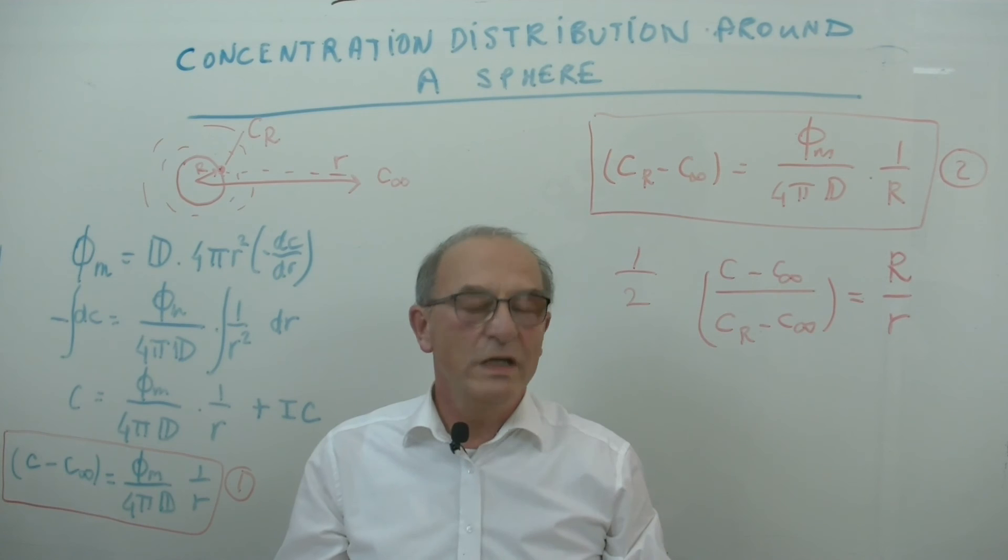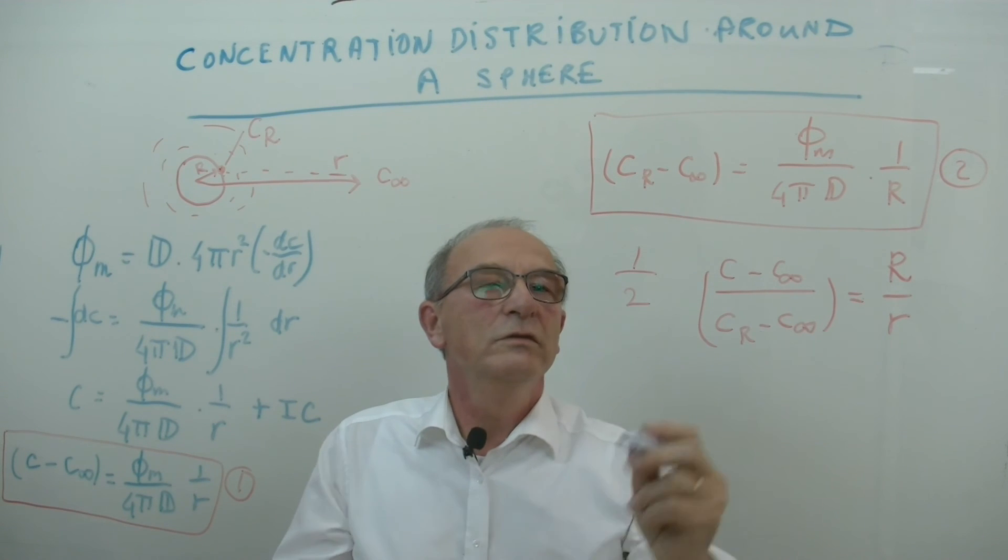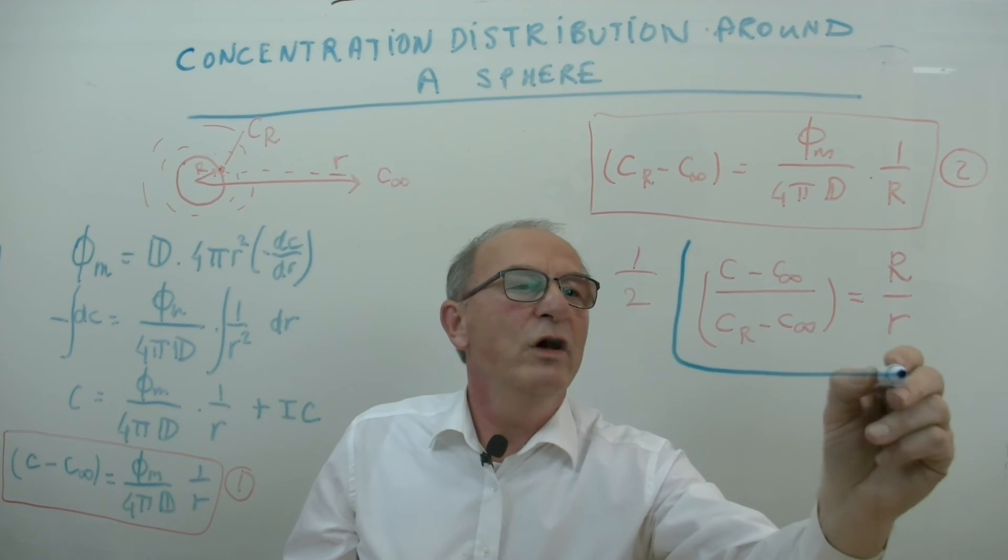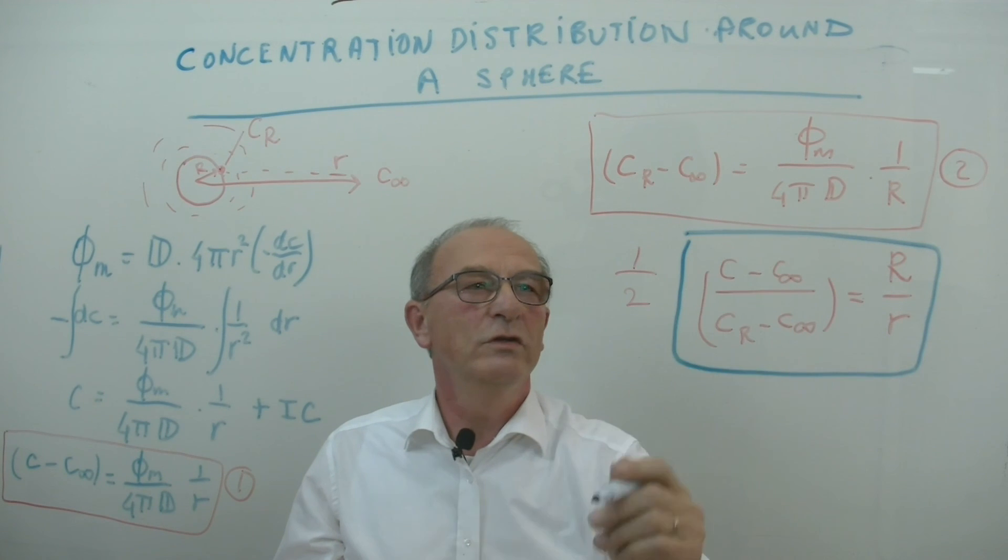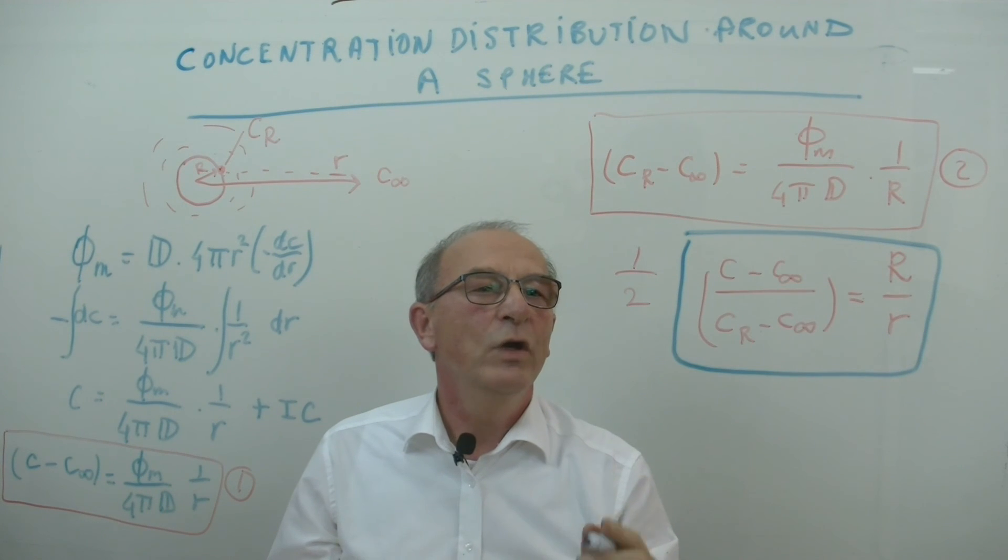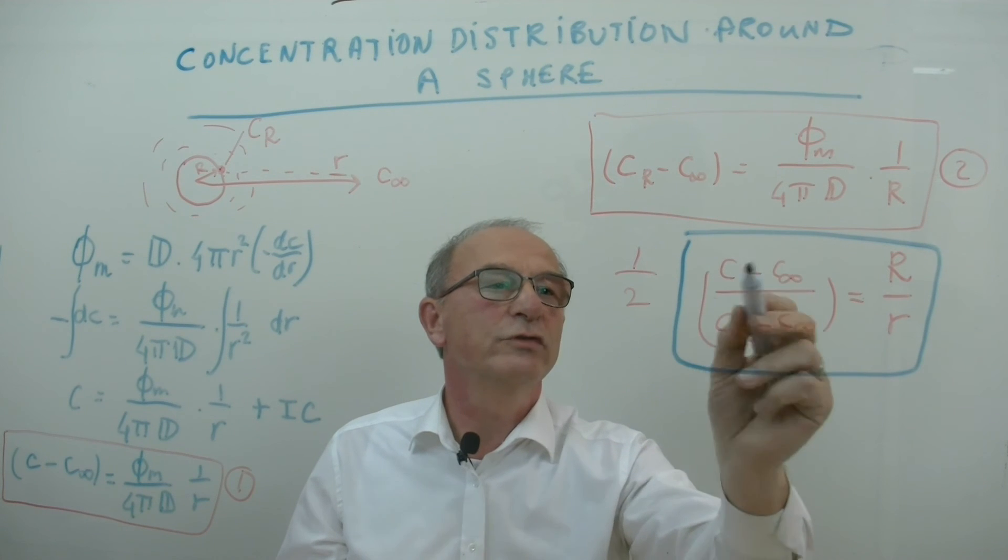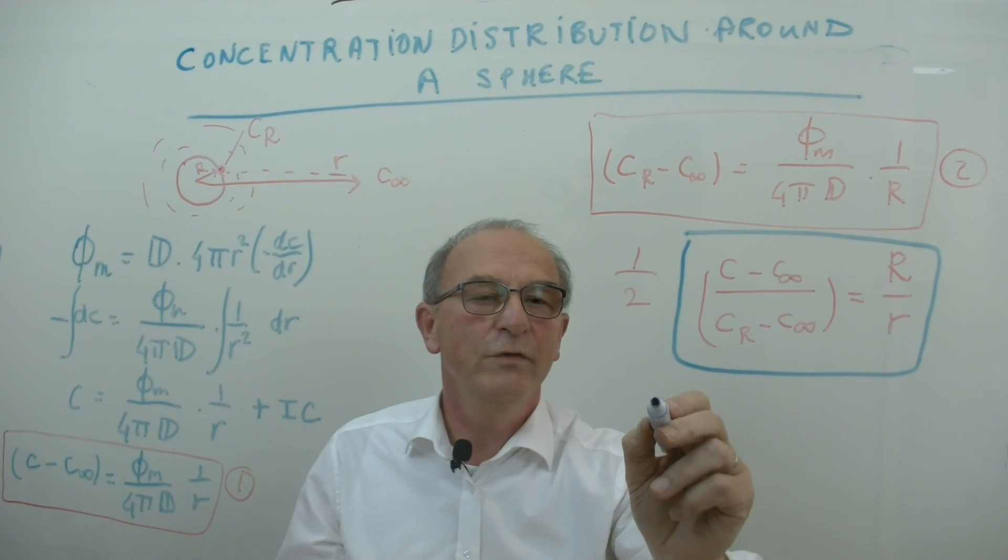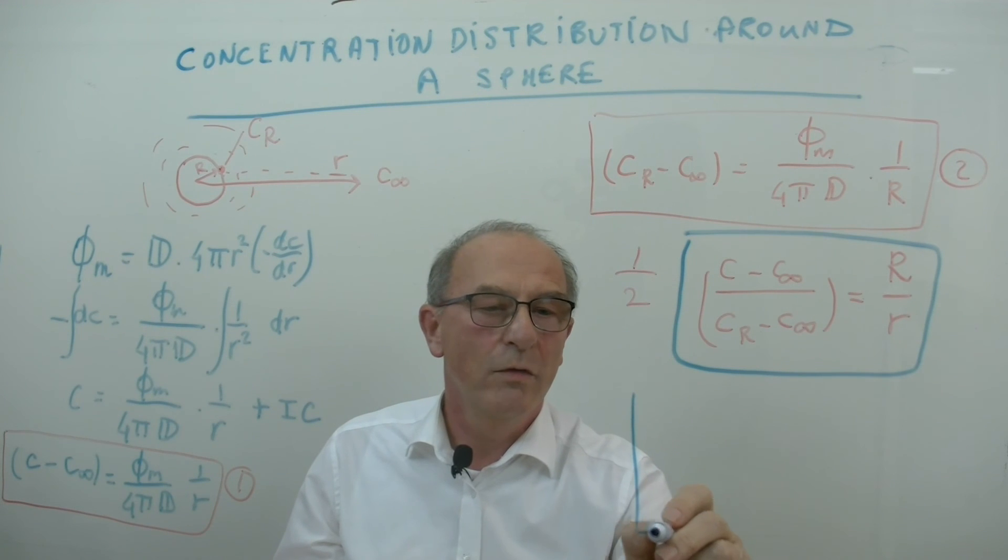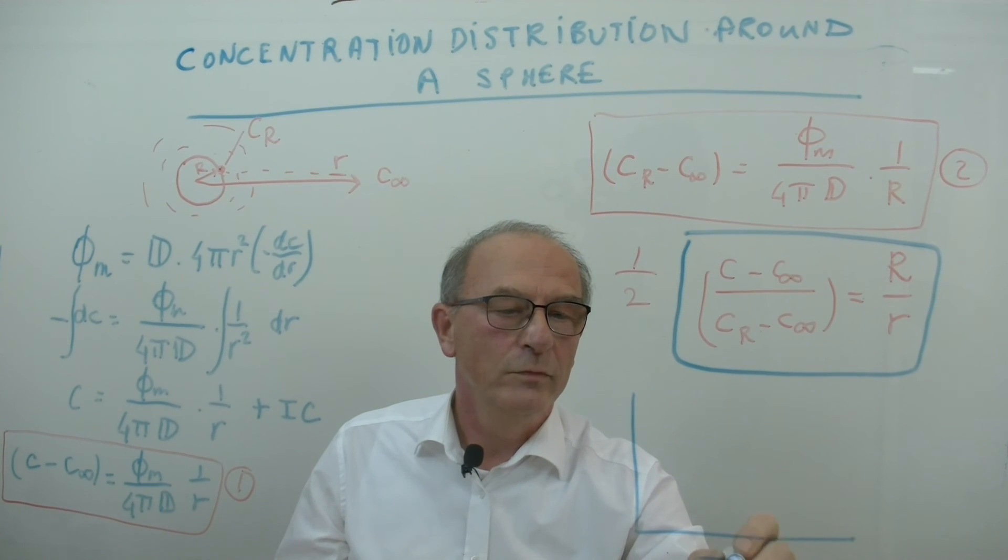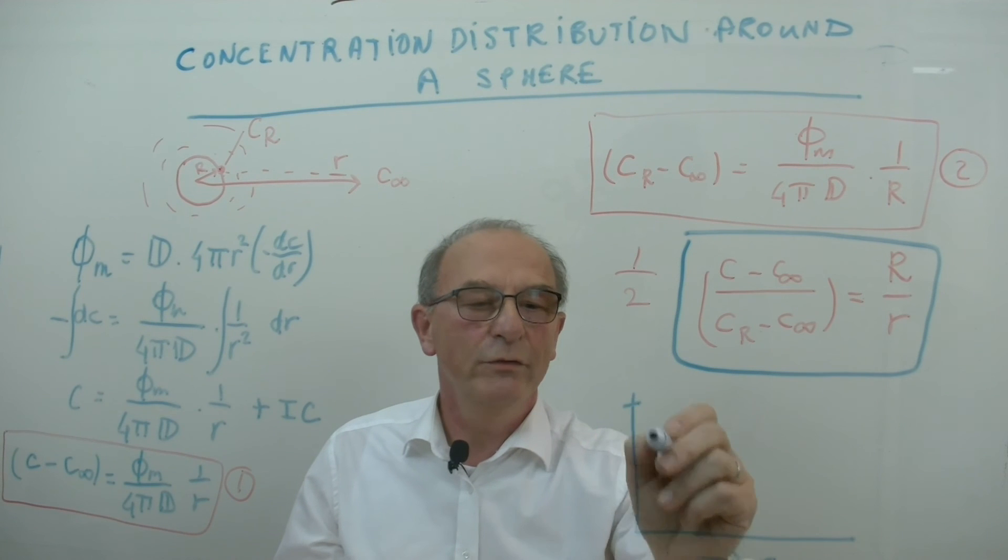Well this is an interesting result because without knowing anything about the diffusion or the mass flow rate, we already know how the dimensionless concentration distribution around the sphere is. So if we draw now the distribution around the sphere,